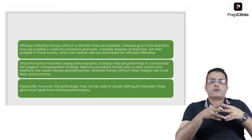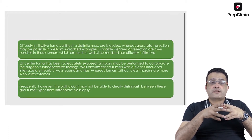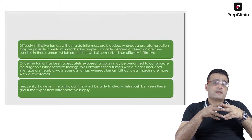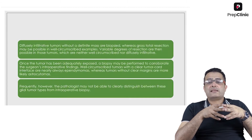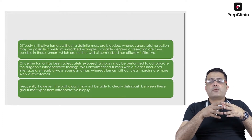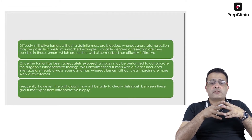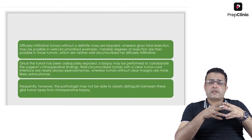A reasonable policy for diffusely infiltrative tumors without a definite mass is biopsy, whereas gross total excision may be possible in well-circumscribed tumors. Variable degrees of resection are possible in tumors that are neither well-circumscribed nor diffusely infiltrative. Once an intramedullary spinal cord tumor is adequately exposed, a biopsy may be performed to corroborate the surgeon's intraoperative findings. Well-circumscribed tumors with a clear tumor–cord interface are nearly always ependymomas, whereas tumors without clear margins are usually astrocytomas.